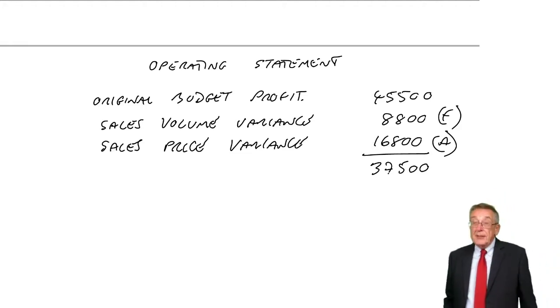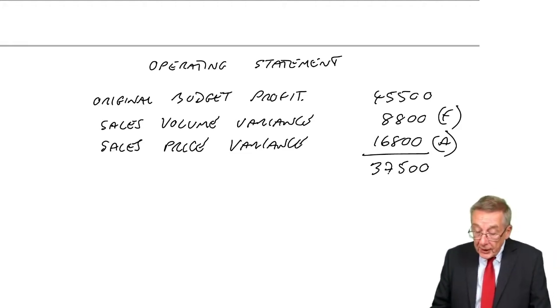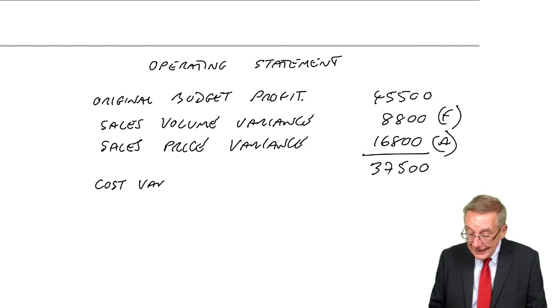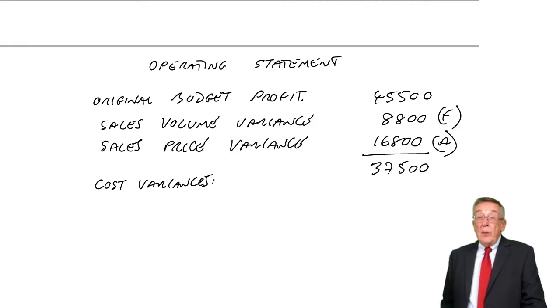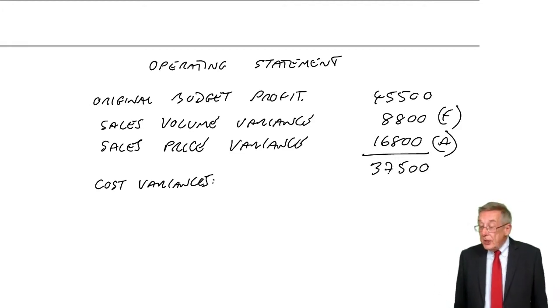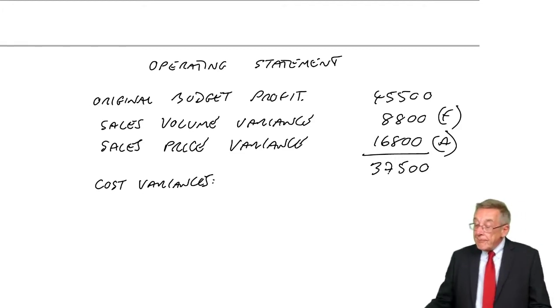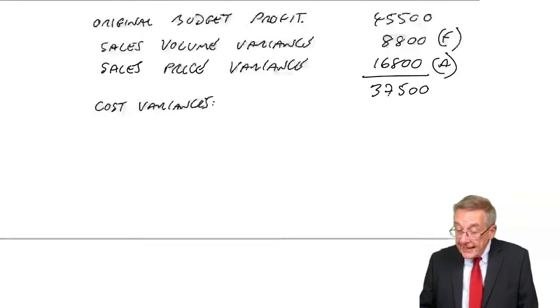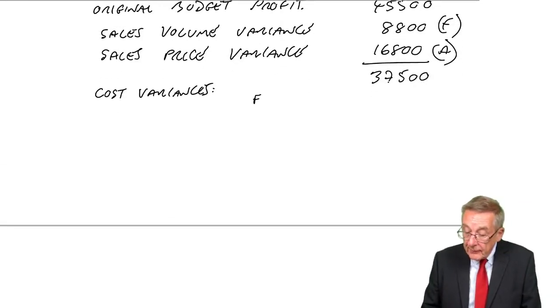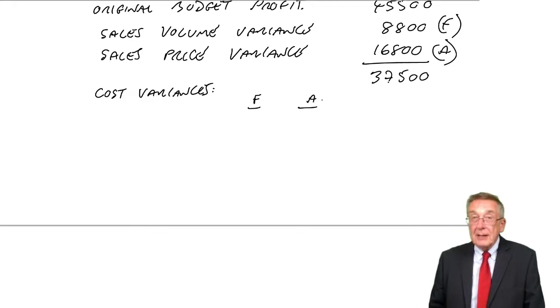Why didn't we get 37,500? Well, because of all the cost variances. We calculated them all in the last lecture, so let's list them. And here, what we tend to do for neatness is show two little columns, favourable, adverse. You'll see what I mean, but just let's list them.